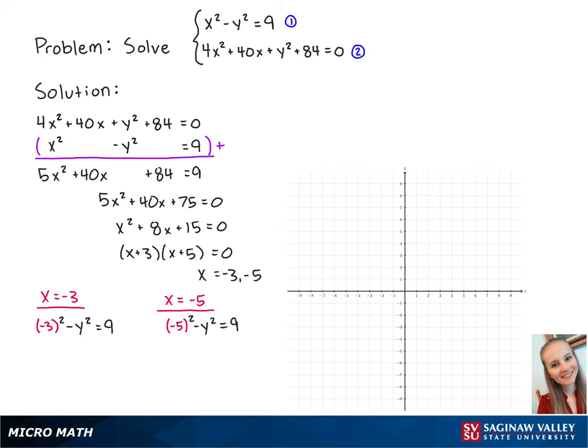Now we're going to plug the x values into one of the equations to solve for y. For x equals negative 3, we get y equals 0, and for x equals negative 5, we get y equals 4 or negative 4.